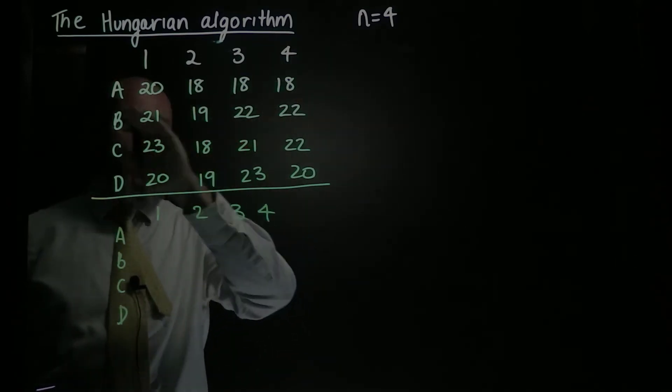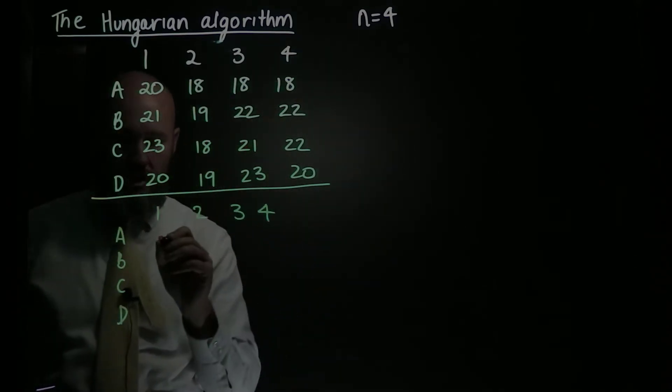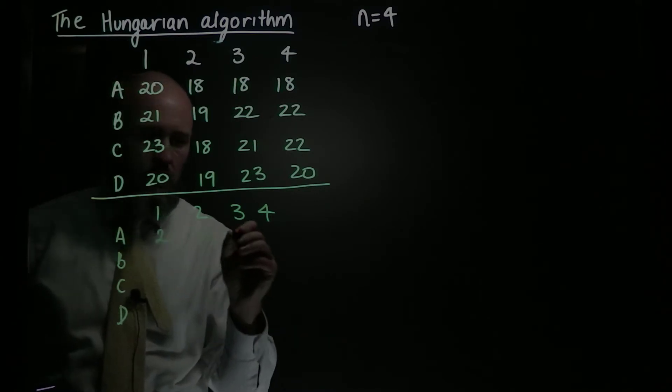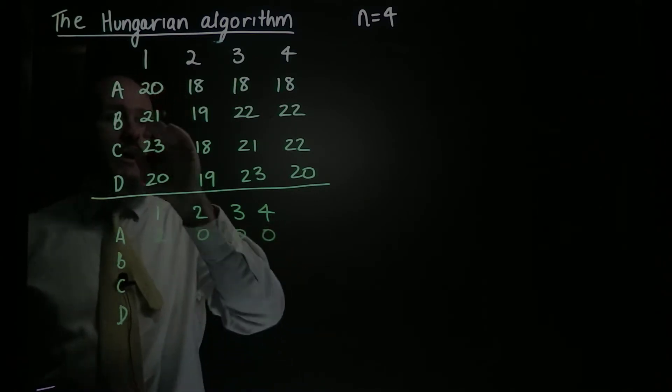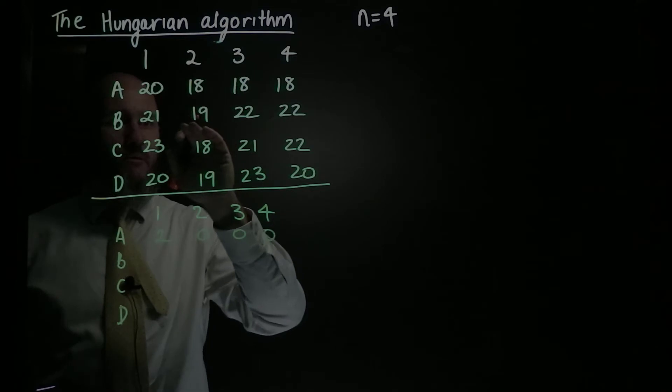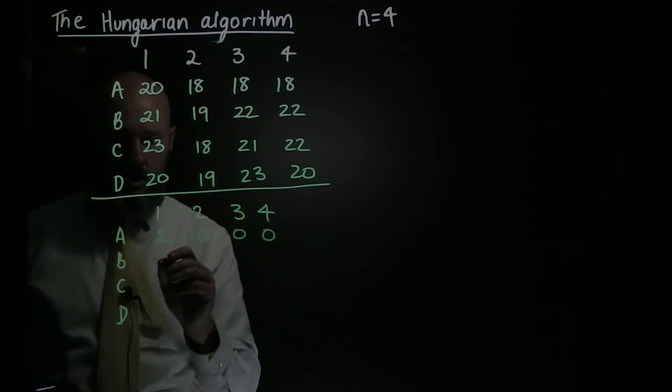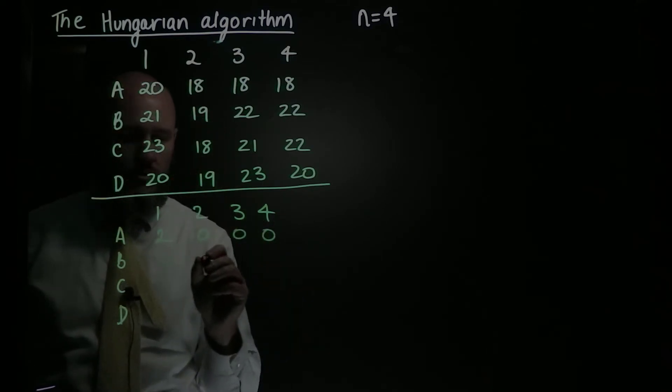So 18 is my minimum value in row A, so I'm going to subtract 18 from all of them, I get 2, 0, 0, 0.